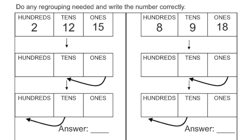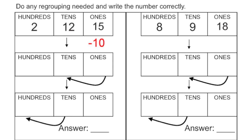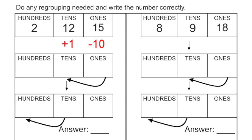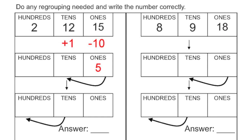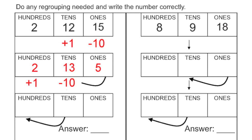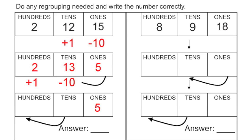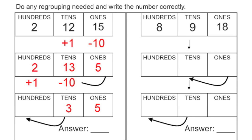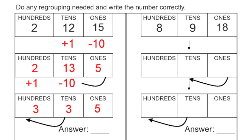Let's try another example. I have 2 hundreds, 12 tens, and 15 ones. Can I regroup the ones? Yes. I take 10 away from the ones column and add 1 into the tens column. So instead of 15 ones, I now have 5, and instead of 12 tens, I now have 13. I still have 2 hundreds. Now step 2 — can I regroup in the tens place? Yes, I have 10 or more. I take 10 tens away and add 1 to the hundreds. I still have 5 ones, 3 tens remaining, and now 3 hundreds. My final answer is 335.